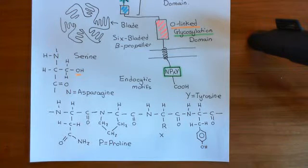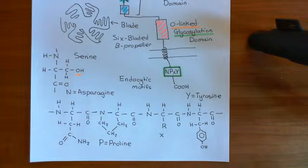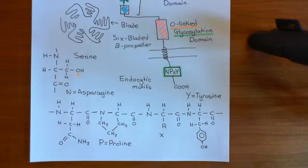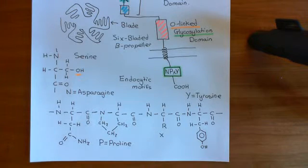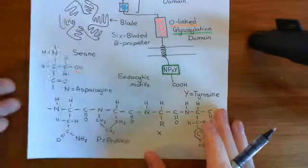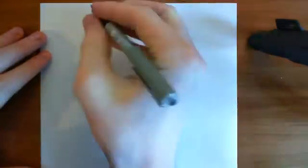Welcome back to this next video in which we are discussing the LDL receptor. In this video, what I want to now do is discuss the synthesis of the LDL receptor in the rough endoplasmic reticulum, then how it's trafficked to the Golgi apparatus, and then how it's trafficked from the Golgi apparatus to the plasma membrane, then what happens when it binds to LDL and the process that then follows to endocytose the LDL receptor with LDL bound to it. Let's start with the production of the LDL receptor.